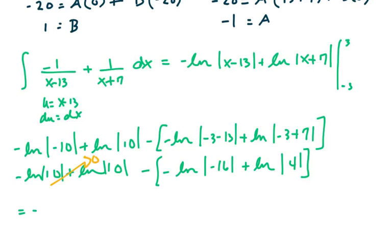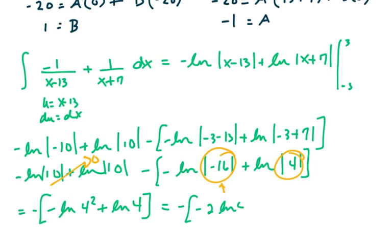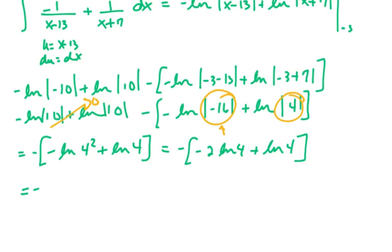Let's do our log math. Notice you've got a 16 and a 4 here. If I reduce this into powers, that expression is going to become ln of, and it's the absolute value, so this is 4 squared plus ln of 4. This is minus 2 ln of 4 plus ln of 4, and we're left with minus negative ln of 4.